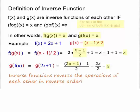Inverse functions reverse the operations of each other in reverse order. The function f of x was to double and add 1. To reverse the steps of doubling and adding 1, we subtract 1 and then divide by 2. That's the g of x function. The g of x function was to subtract 1 and then divide by 2. To reverse those operations, we double and then add 1.